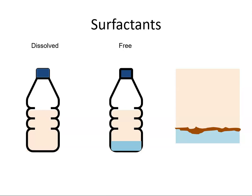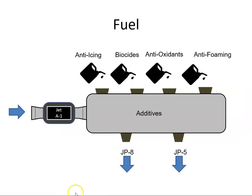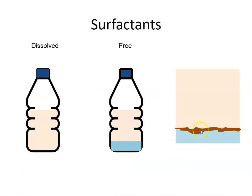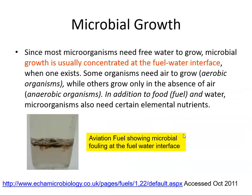We need to get rid of these microbial growths and we can do that by using biocides. On occasions there might be additives such as a biocide added to the fuel, and that would help kill the microorganisms. If you look at the aircraft flight manual it will tell you when and where the biocide should be added. These microorganisms exist at the fuel to water interface, and since most microorganisms need free water to grow, microbial growth is usually concentrated at the fuel-water interface when one exists.